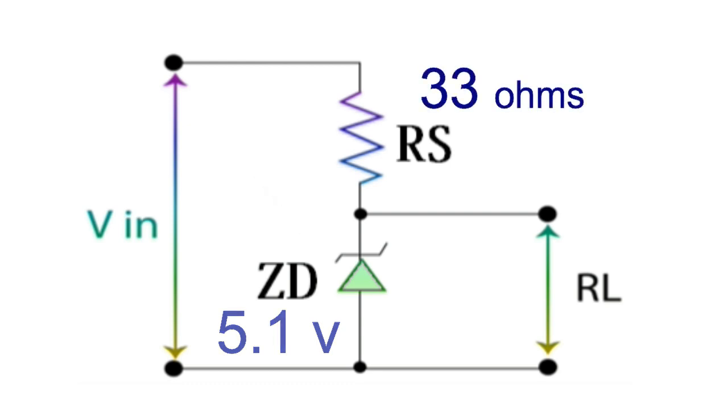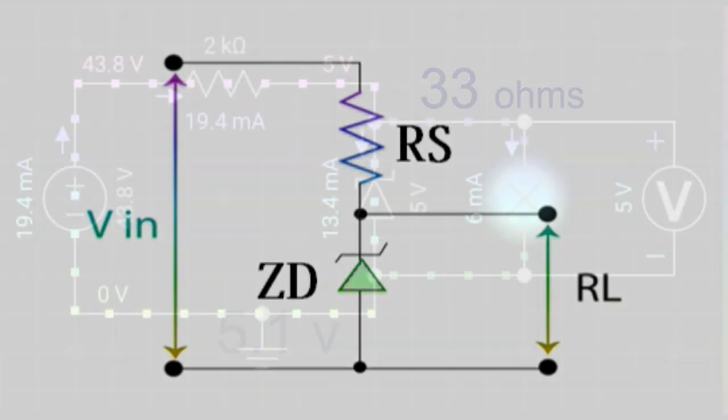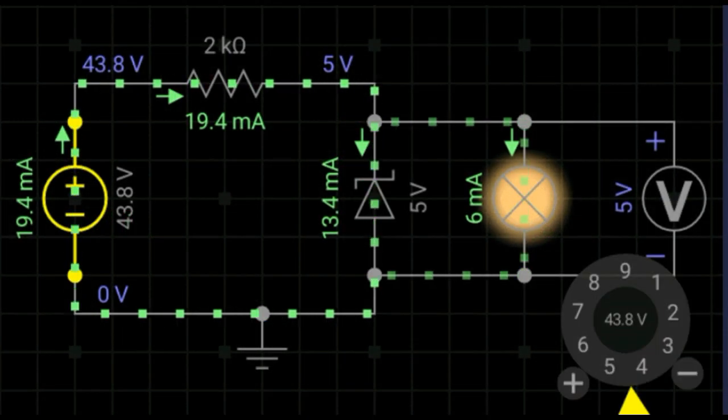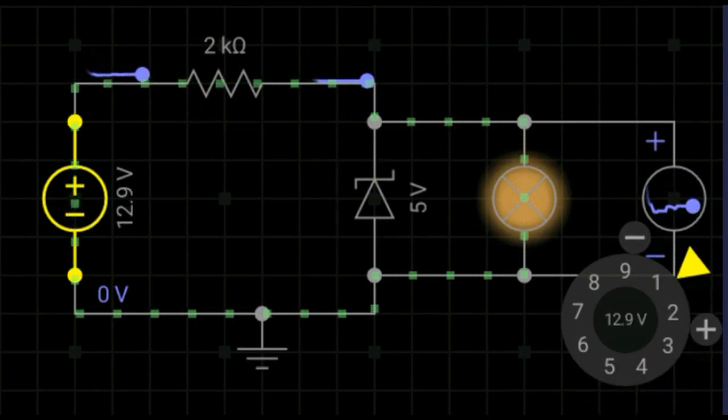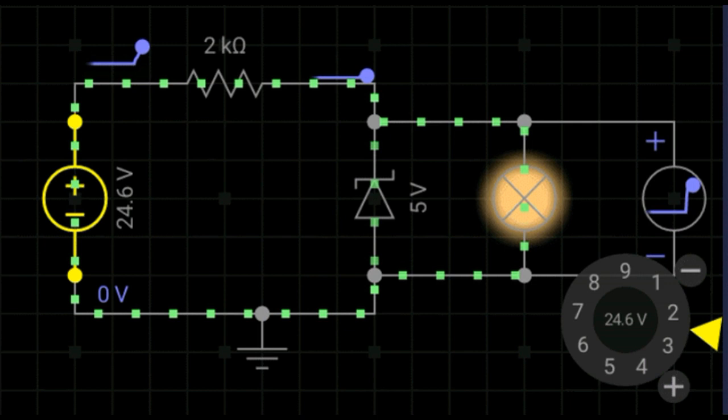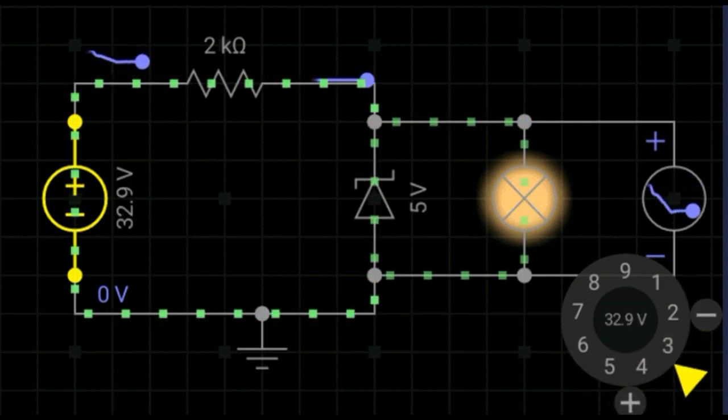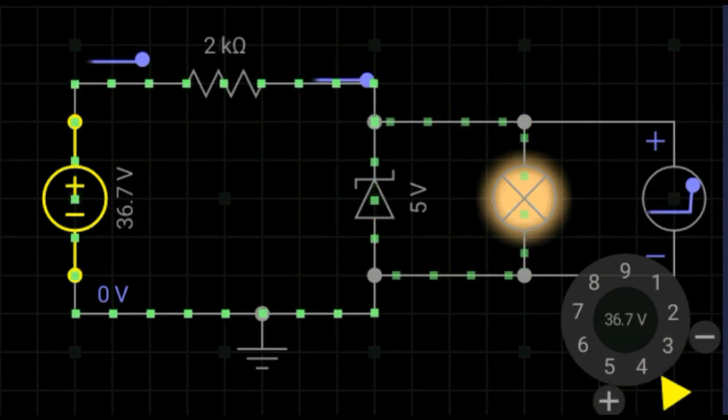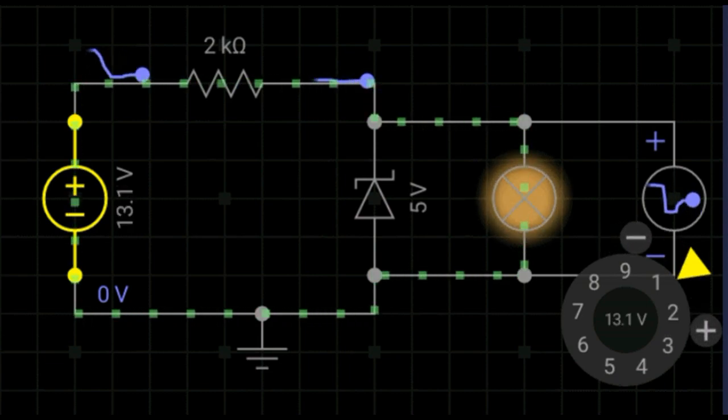When the input voltage increases more than the Zener breakdown voltage, the conduction voltage of the Zener diode reaches the breakdown voltage level. As a result, it provides the regulated output voltage.